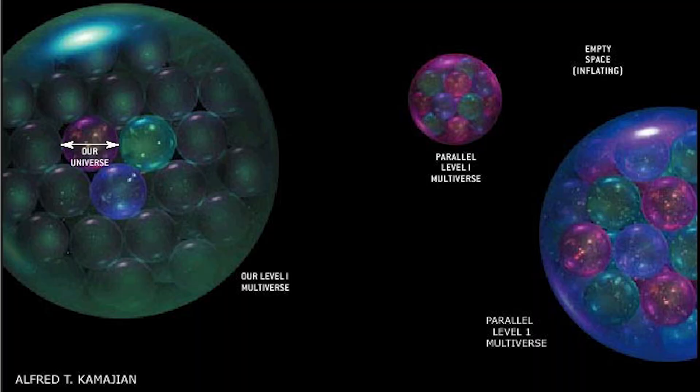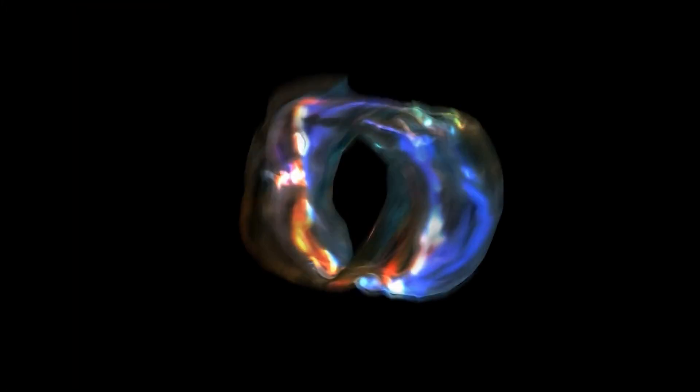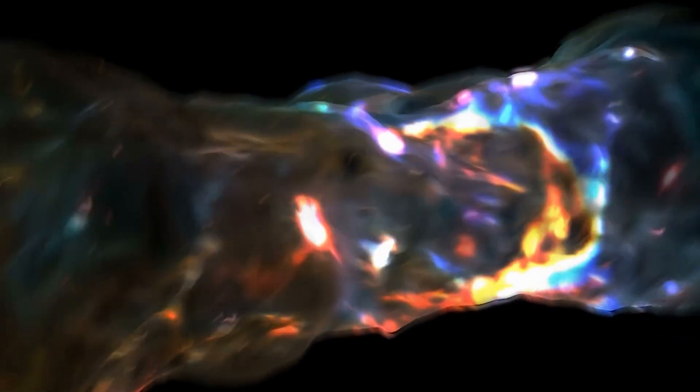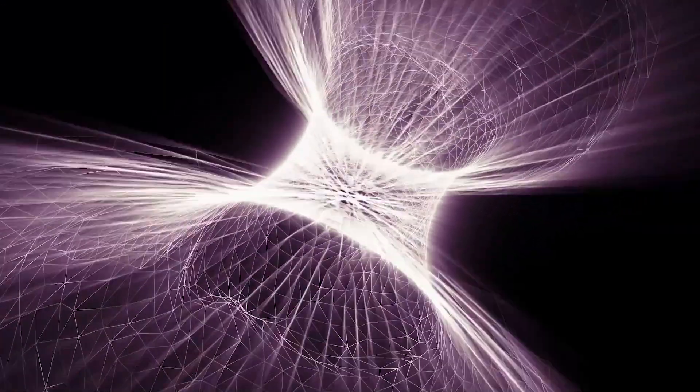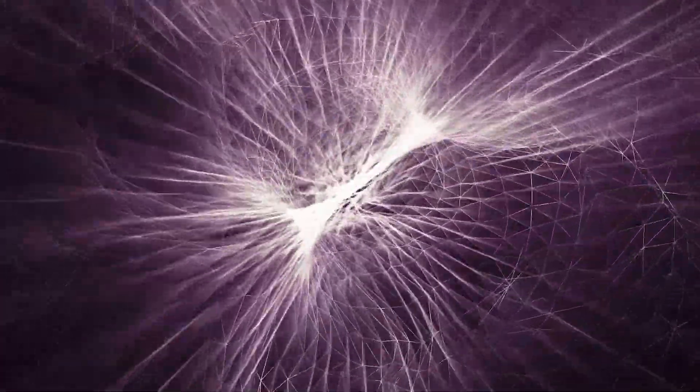First stop, the Level 1 multiverse. Picture a vast, infinite space-time where universes identical to ours are spreading apart due to the Big Bang's expansion. Think of it as a cosmic race, but the finish line keeps moving further away. We might even have doppelgangers in these universes. However, they're moving away so fast that it's impossible to verify. These universes are like our distant, unreachable cosmic cousins.